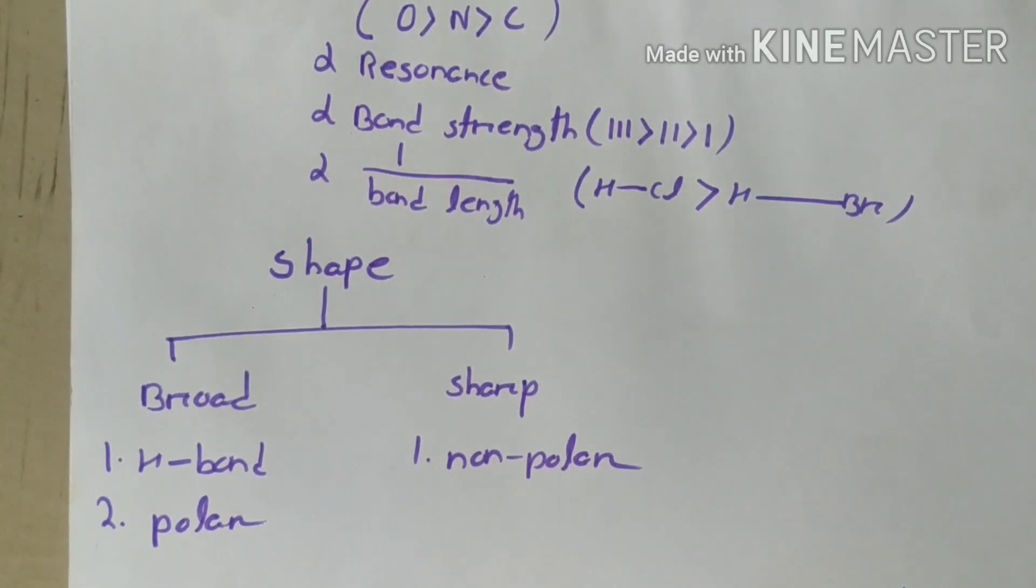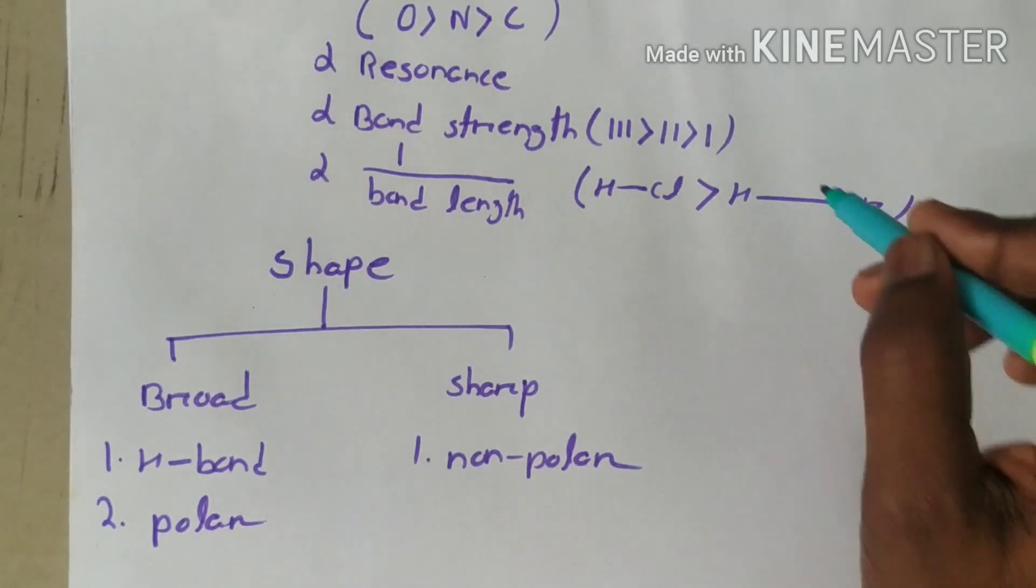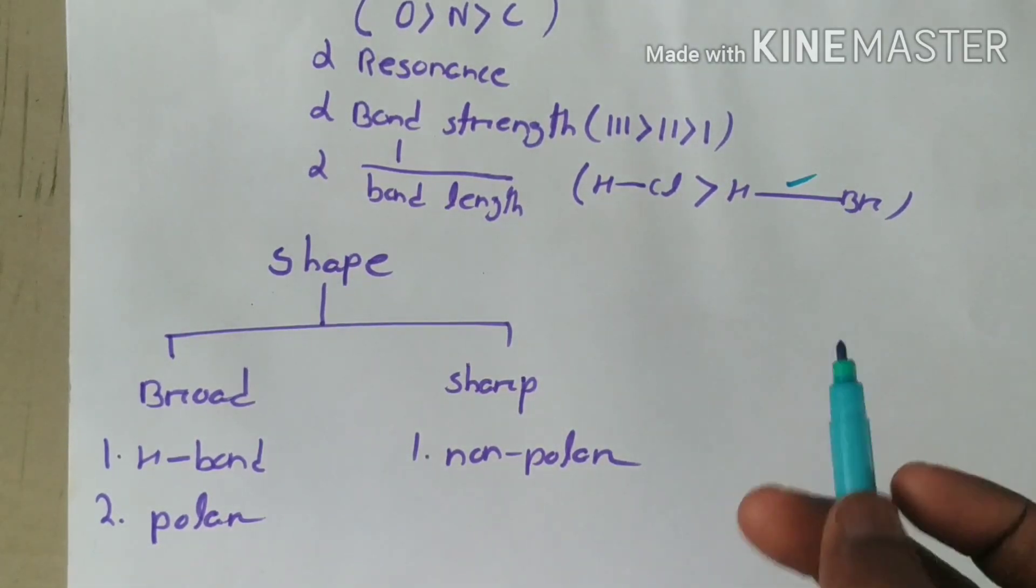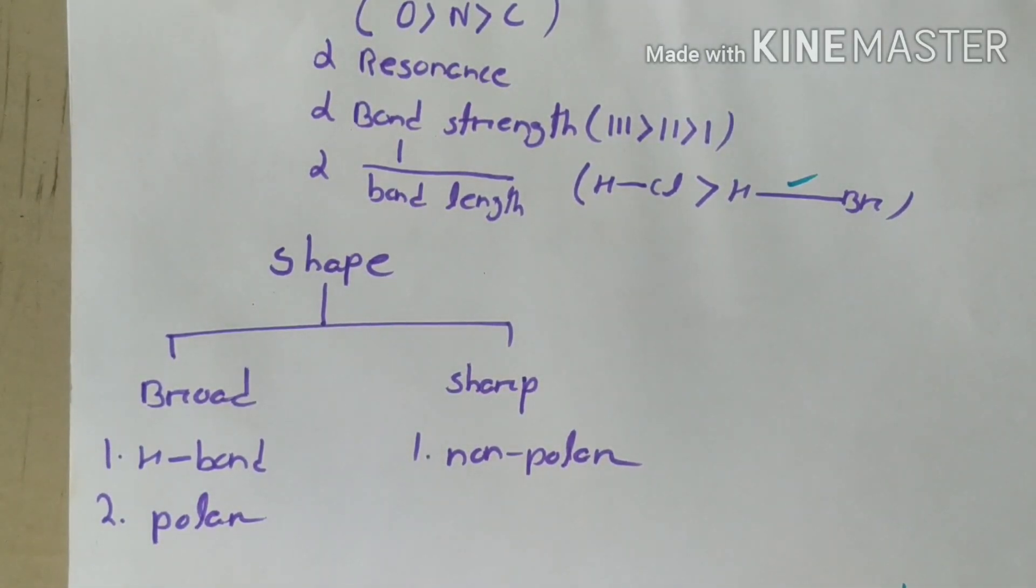It also depends on bond length and is inversely proportional to it. If we go down the period with chlorine, bromine, and iodine, the bond length will increase and as bond length increases, intensity decreases.